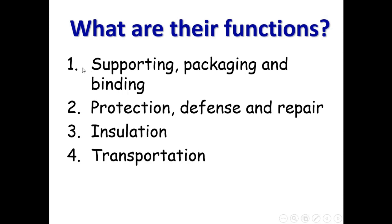The first function of connective tissue is that, by providing extracellular matrix, it can support, package, and connect other tissues together to make organs in our body. Also, with a lot of immune cells like white blood cells, connective tissue has protection and defense roles. With fibroblast cells, it also has a repair function — usually connective tissue allows other tissues to repair themselves; if they cannot, the connective tissue repairs them, for example heart and cartilage.